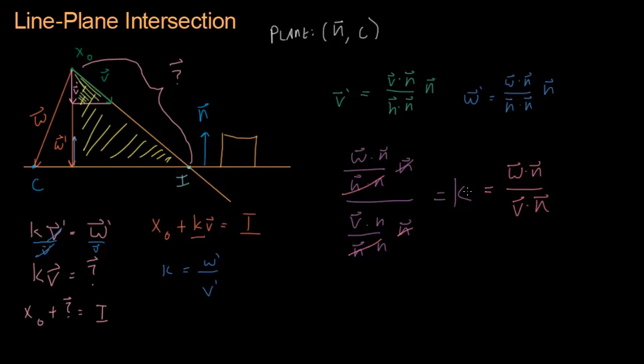And that'll give us k. So now let's take k and substitute it back into our equation right here. And we'll get x naught plus w·n over v·n times v equals our intersection point i. And we're done.